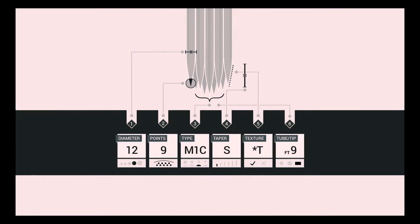There are six parts to the new label system. The first five parts identify the properties of each needle. A needle's properties consist of diameter, points, type, taper, and texture. A needle's properties will always be shown in this order, even when written outside of the needle ID label.